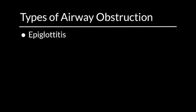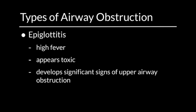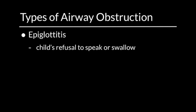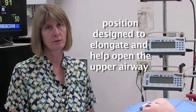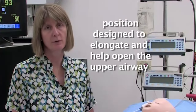Epiglottitis presents typically in a more fulminant way, where a child is well in the morning and by afternoon has a high fever, appears toxic, and develops significant signs of upper airway obstruction — including some noisiness on inspiration because of soft tissue swelling of the epiglottis and surrounding tissues. It is also characterized by the child's refusal to speak or swallow because of pain in their throat, so those children will typically be drooling. If they can verbalize at all, they have what's described as a hot potato voice, and they may adopt a characteristic position called tripoding.